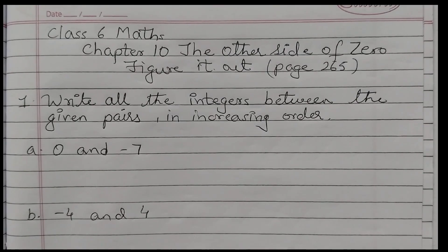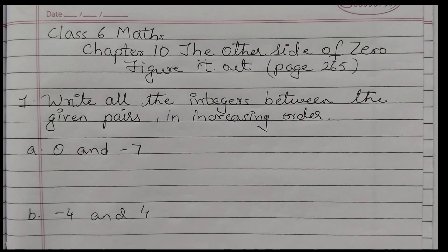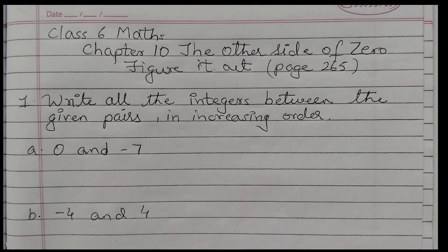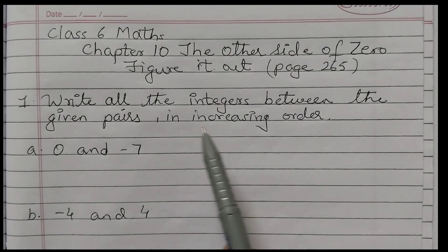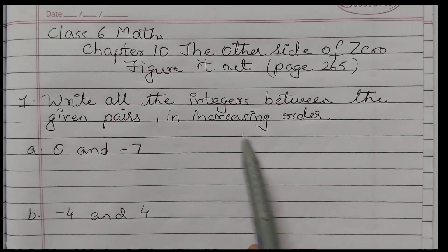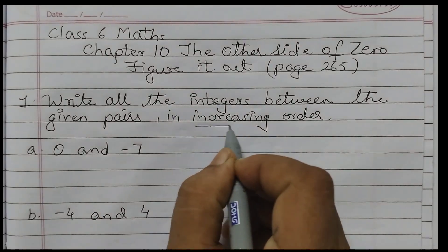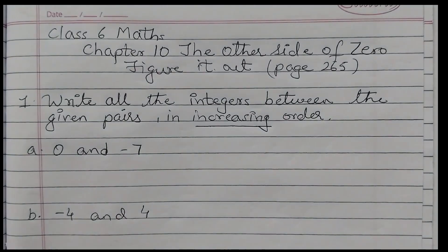Hello students, welcome back to Rosiematt's class. In this video we are going to do question number 1 and question number 2 of 'Figure It Out' given on page number 265, and this is from chapter number 10, 'The Other Side of 0'. The first question is: write all the integers between the given pairs in increasing order — that means small to big.